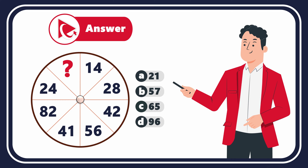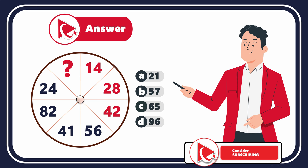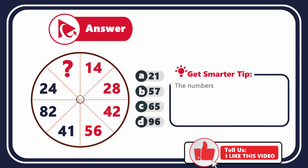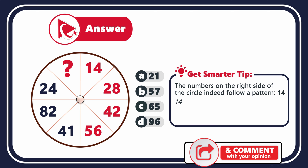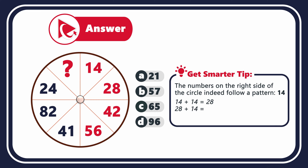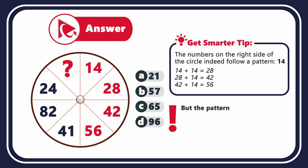Remember, I told you that this question is tricky. Let's look in detail why the answer is not obvious. Looking at the numbers 14, 28, 42, and 56 — they all increase by 14: 14 plus 14 equals 28, 28 plus 14 equals 42, and 42 plus 14 equals 56. But then this pattern breaks and you see numbers 41, 82, and 24. Unfortunately, this pattern is misleading and it's there to confuse you.